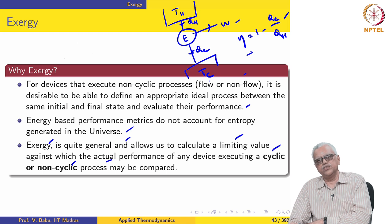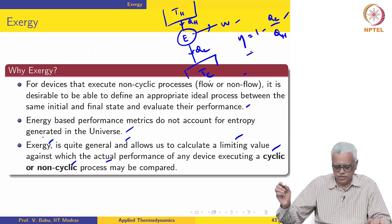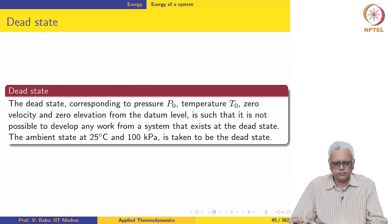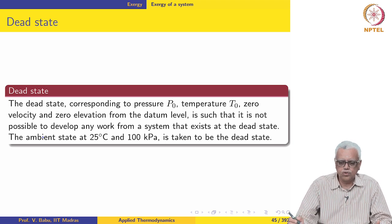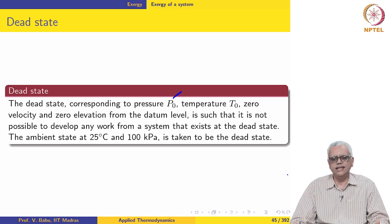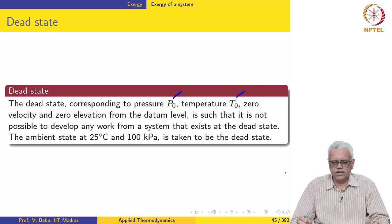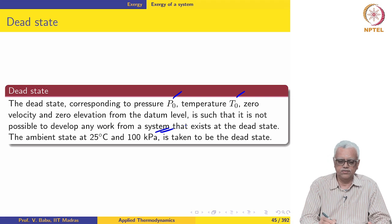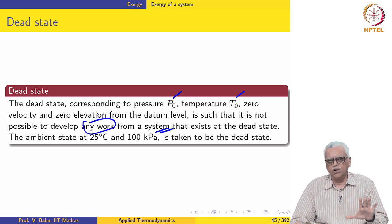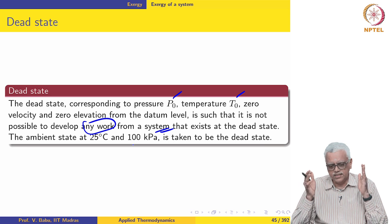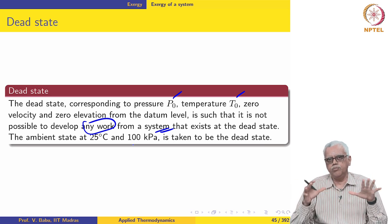To develop an expression for such an efficiency, we start with the notion of exergy. First, let us define a reference state, or what is called a dead state. We denote the pressure at the dead state as P0, temperature as T0, velocity as 0, and elevation above the datum as 0. When a system exists in this state, it is not possible to develop any work from it. Normally, the ambient state at 25 degrees Celsius and 100 kPa is taken to be the dead state.